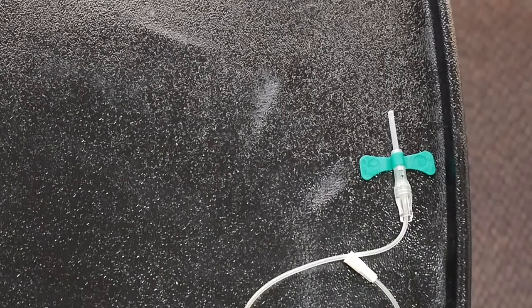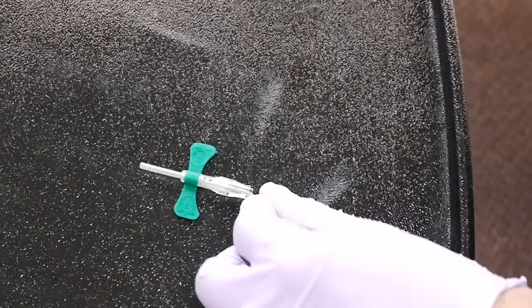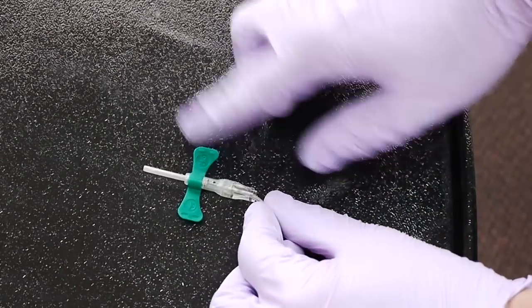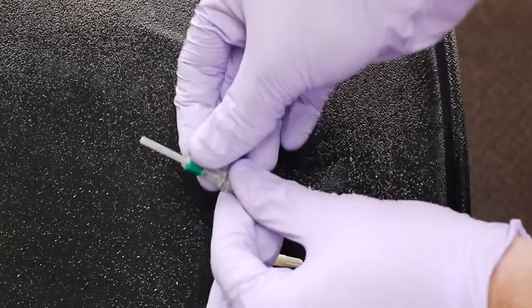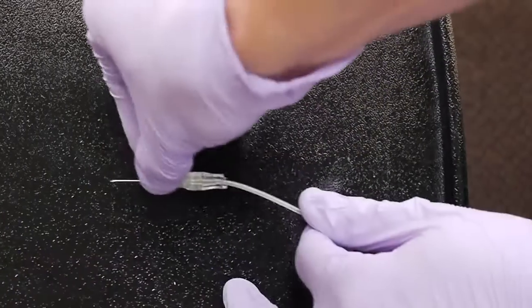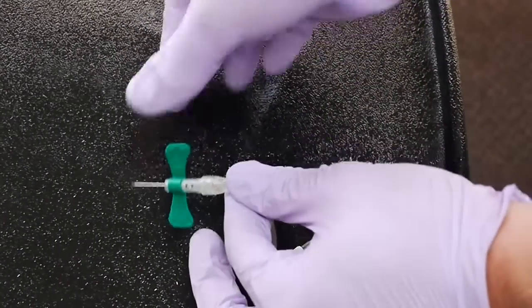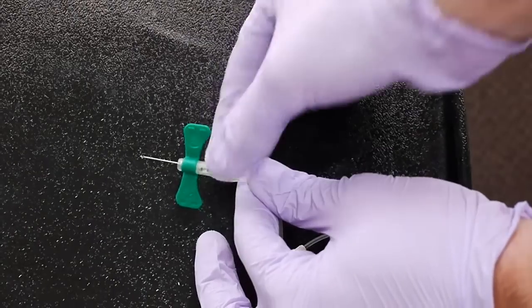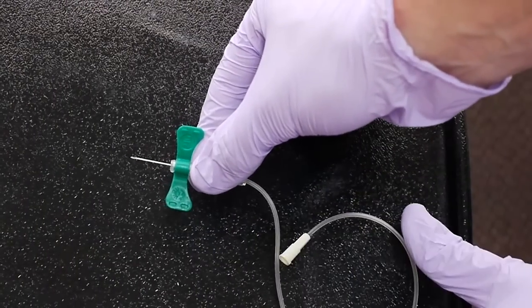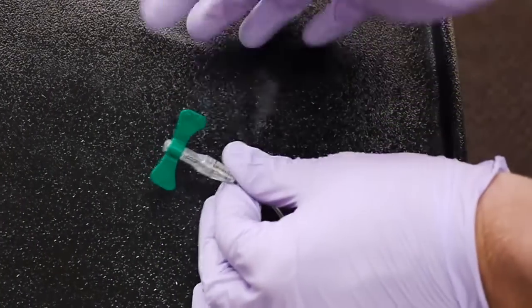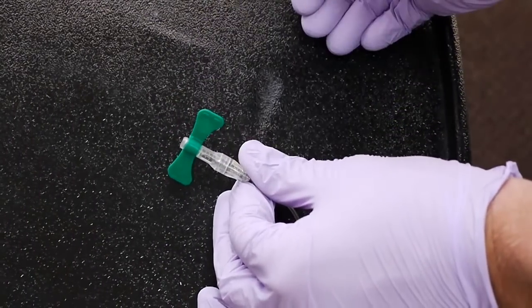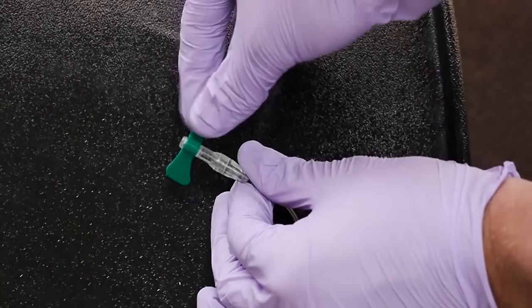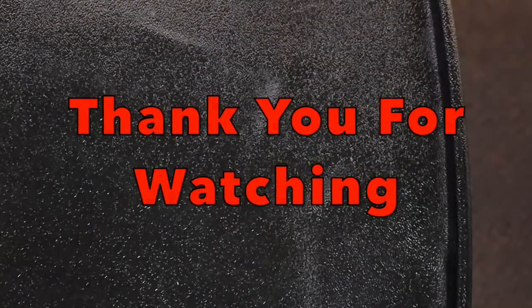And the last device we have is the other type of butterfly that we'll be using. This one, after the needle has been exposed and you are finished with the draw, you can simply push the button on the top of the butterfly. And it will retract the needle into the barrel. And it is now safe. And you can dispose of it into the sharps container.